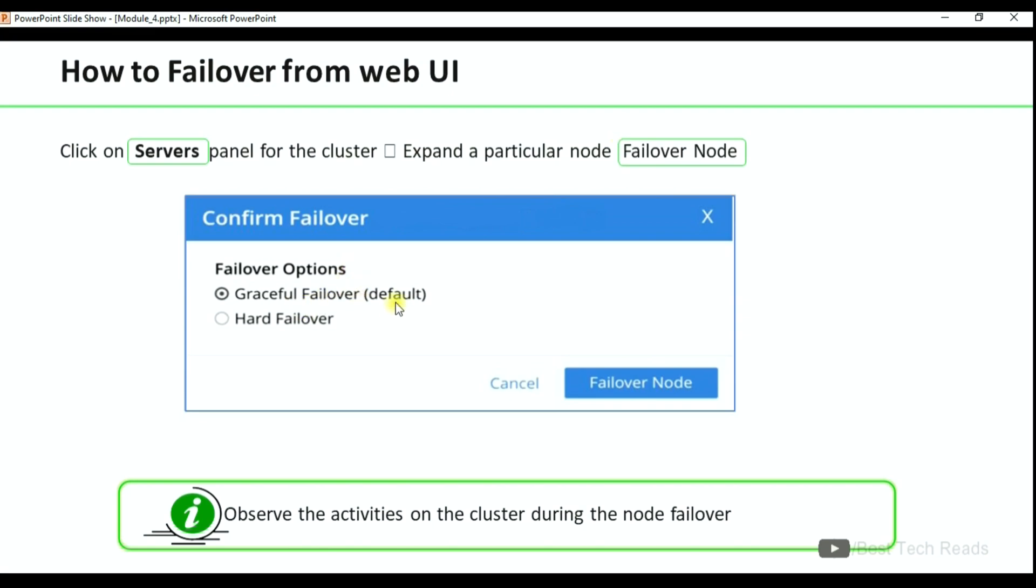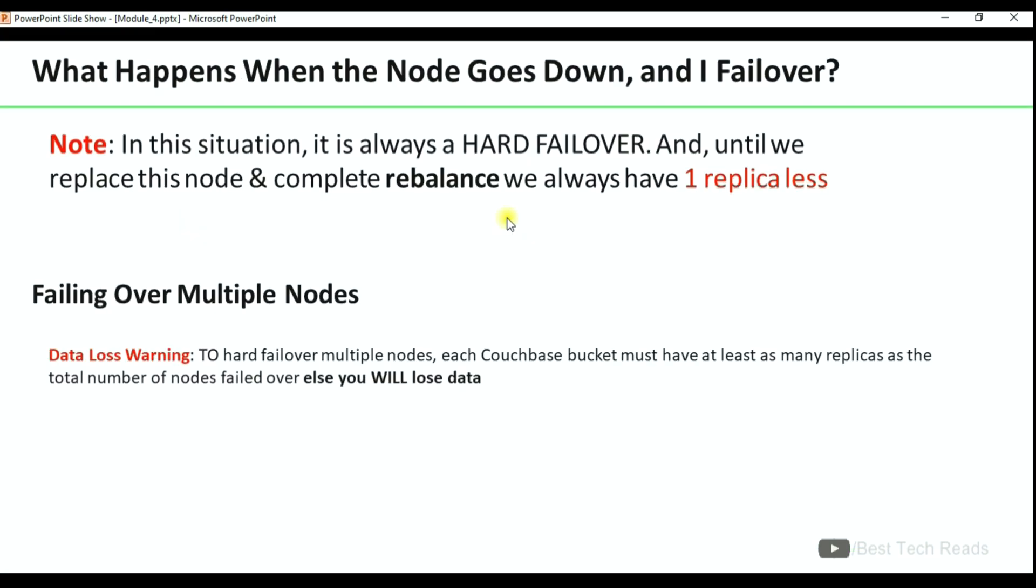Here comes one more scenario: what happens when the node goes down and I failover? In this situation, it is always a hard failover. Until we replace this node and complete rebalance, we always have one replica less. This is an important point which can be asked in interviews as well.